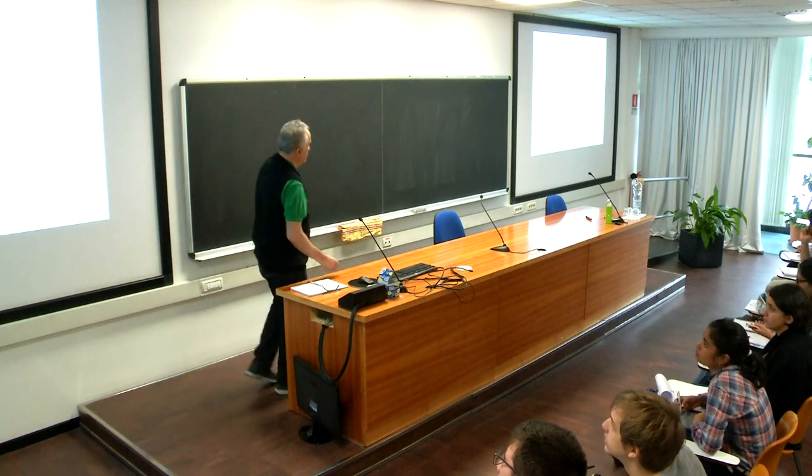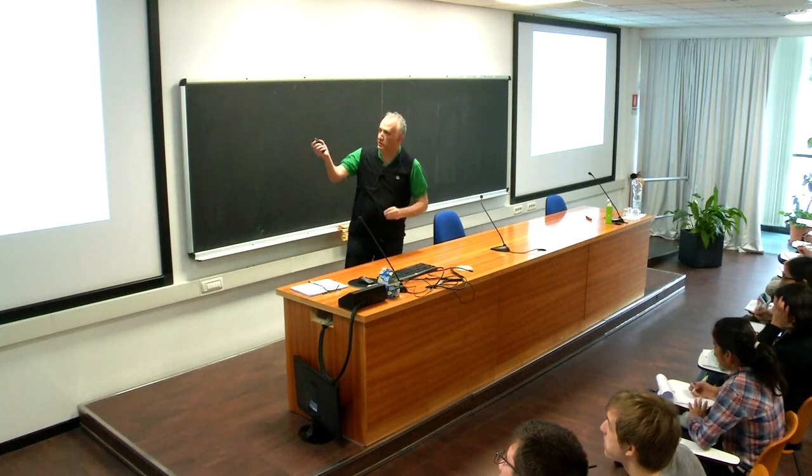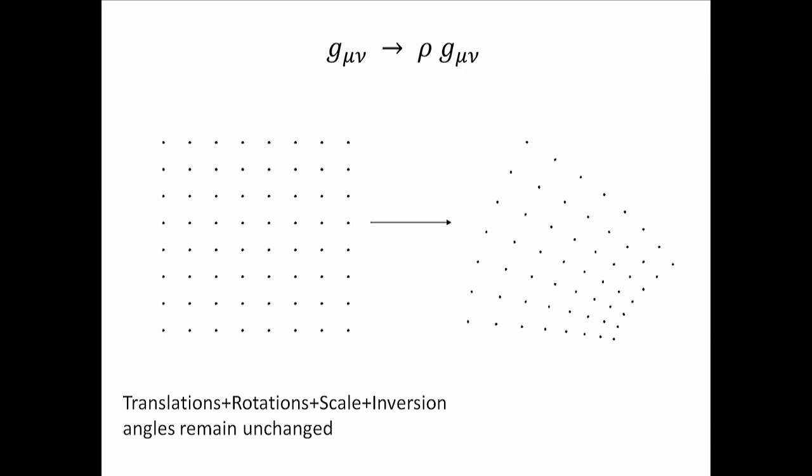Let's start with conformal transformations. We went to a point like this yesterday. Conformal transformations are transformations which involve, as well as the usual space-time translations — which are translations plus rotations — scales and inversions as well. So not only will it rotate, not only will it translate to somewhere new, but it also gets deformed. It gets deformed because scales change, and I also do an inversion. I will tell you in a minute what the inversion is.